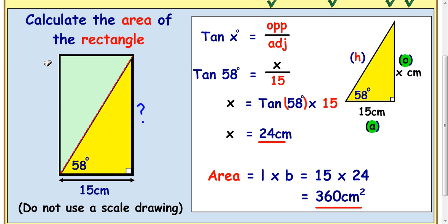It's quite a complicated question in that you need to know the area of a rectangle, and then you need to go back and use trigonometry to work out the length of the rectangle. And also to spot the triangle and draw it out.